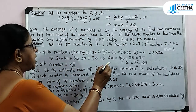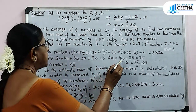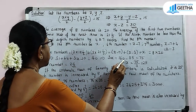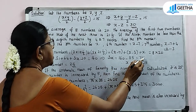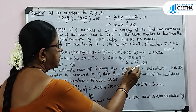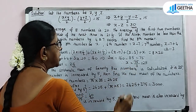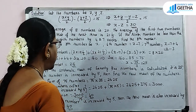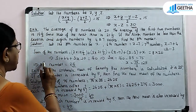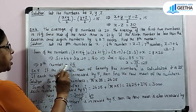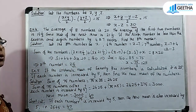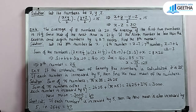That implies 3x equals 160 minus 85, that is 75. Therefore x equals 75 by 3, that is 25. Therefore the 8th number equals 25.